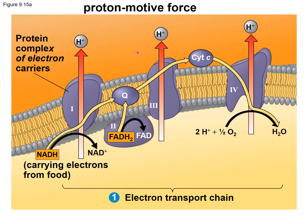This builds up the proton motive force. These protons, building this chemical gradient — the only way they can go back to reach equilibrium and return to the matrix is via one route; they can't go back through the pumps, which were moving them against the concentration gradient. What ultimately happens is the proton gradient builds, the electrons are passed through complex 4, and they combine with hydrogen and oxygen to make water. This is the electron transport chain.